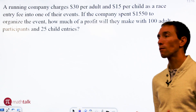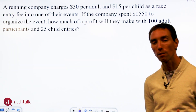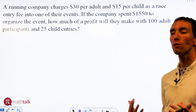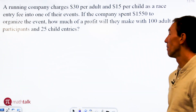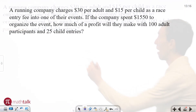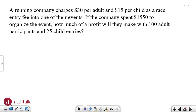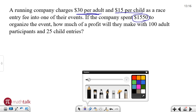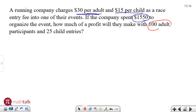These are problems where there are really a lot of pieces to it. You want to take it one step at a time and start figuring out what is useful and what's not. Obviously $30 per adult is key and $15 per child is key as well. The amount of money they've already spent is $1,550 — that's important. And then how many adults there are — a hundred — and how many children there are — 25.